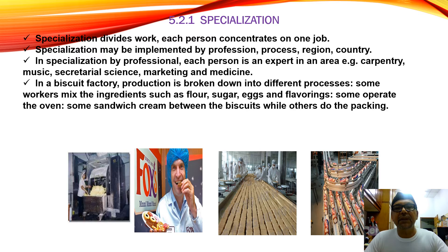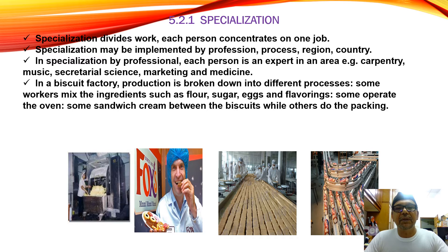Specialization divides work — each person concentrates on one job. That is the meaning of specialization. Specialization may be implemented by profession, process, region, or country. Specialization by profession: each person is an expert in one area. For example, a person who is very good in carpentry — carpenter, music, secretarial service, marketing and medicine. A good example is a doctor — they specialize in medicine. A biscuit factory's production is broken down into different processes: some workers mix the ingredients such as flour, sugar, egg. Some operate the oven. Some sandwich the cream between biscuits while others do the packaging. Each job we mentioned here is what we call specialization.